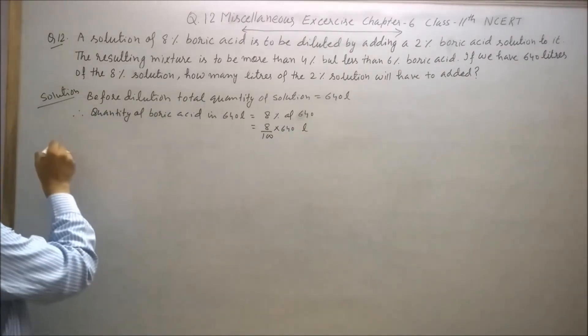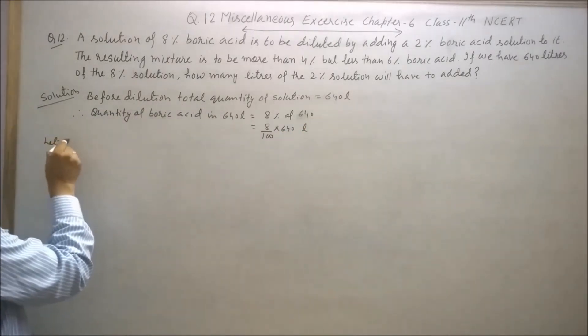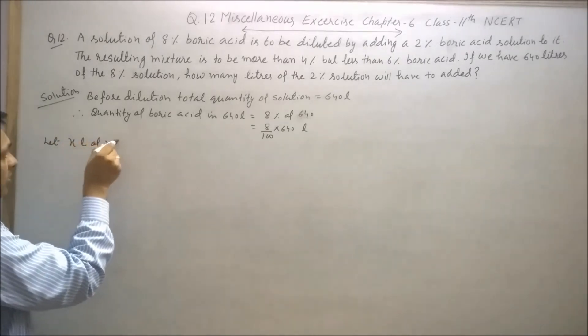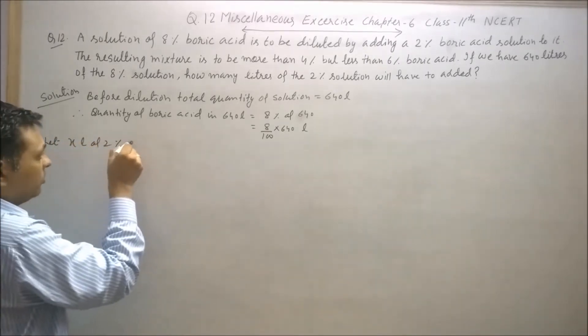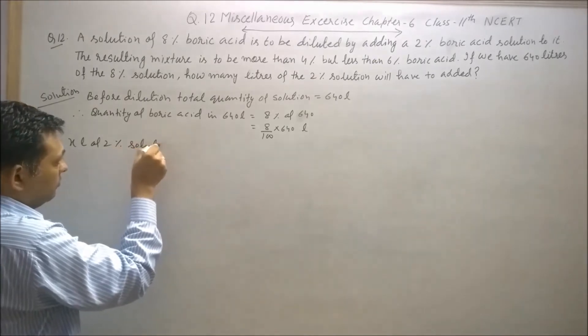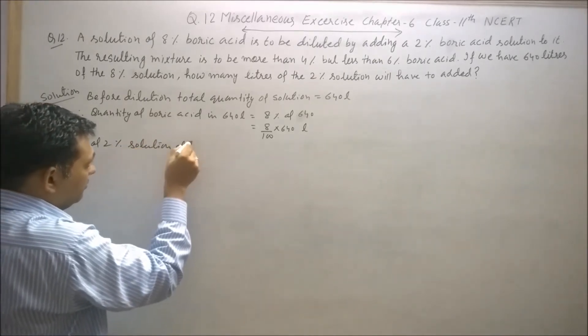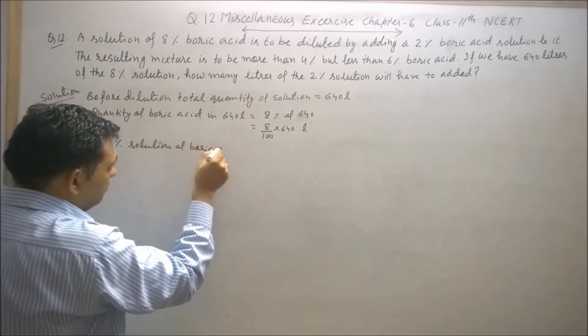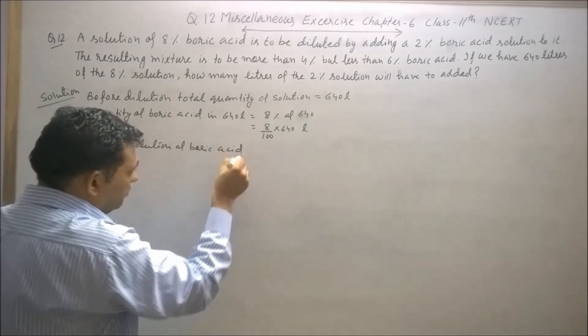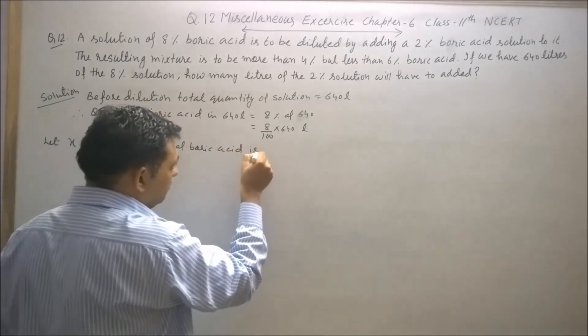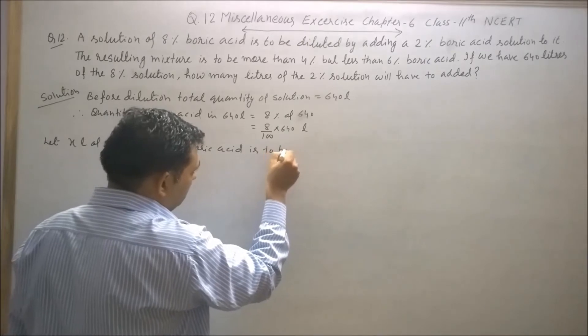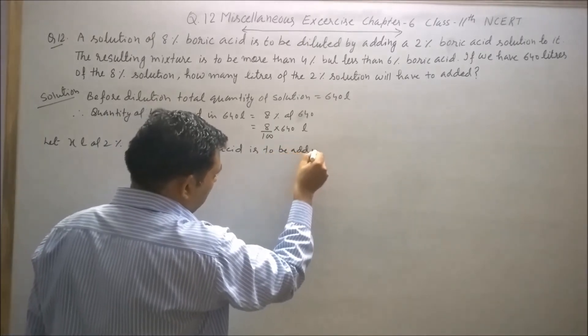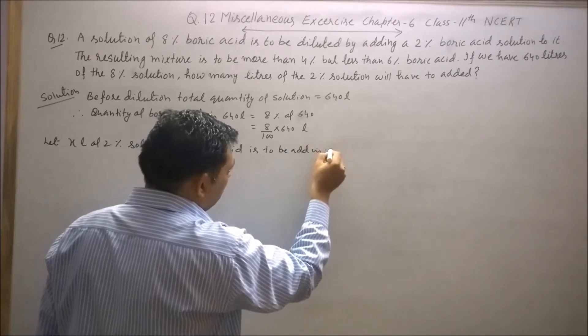Let x liters of 2% solution of boric acid be added in 640 liters.